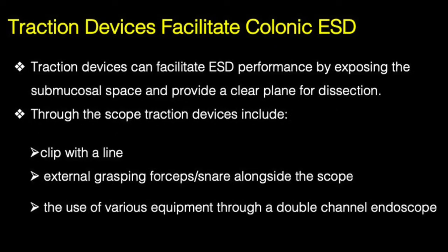Because of the difficulties during colonic ESD, traction devices were invented to expedite the procedure by exposing the submucosal space and providing a clear plane for dissection. How can we create that traction? In the past, people used a clip with a line, external grasping forceps or a snare alongside the scope, and also a double-channel endoscope using the accessory channel for adding a snare, forceps, or rat-tooth to grasp the tissue and allow traction.